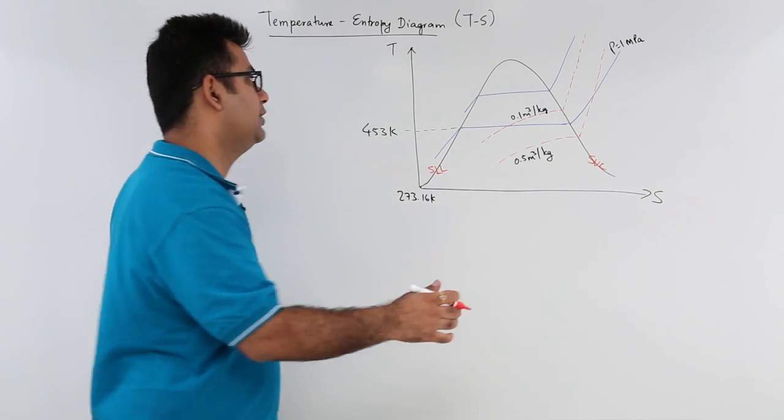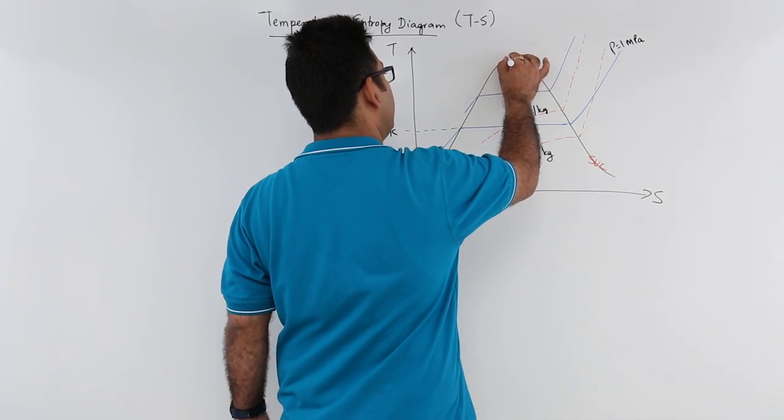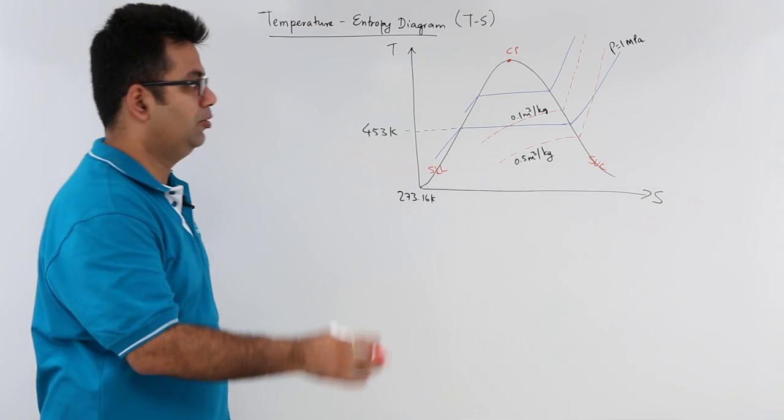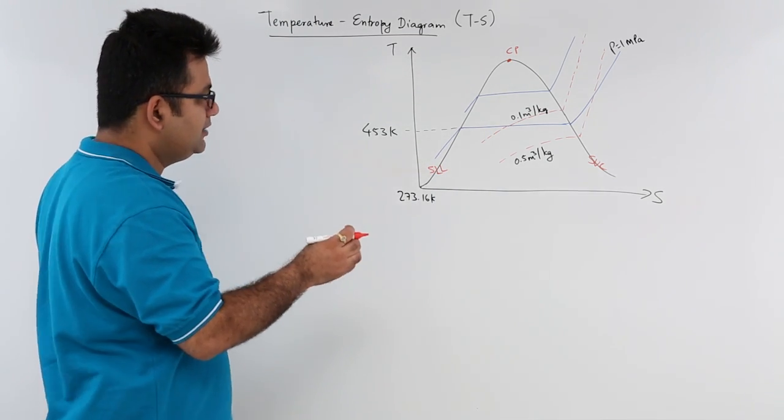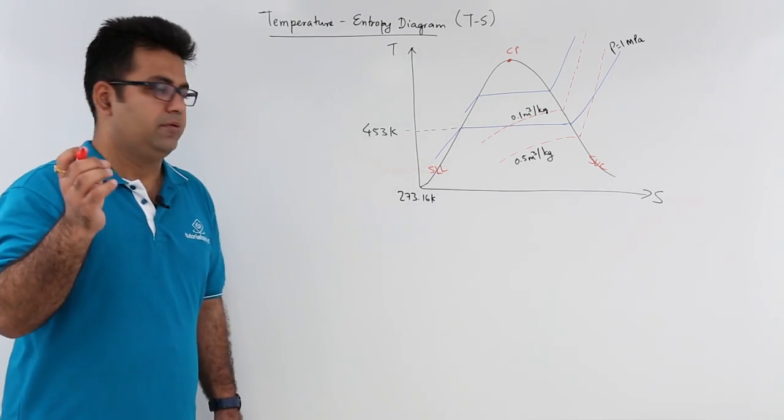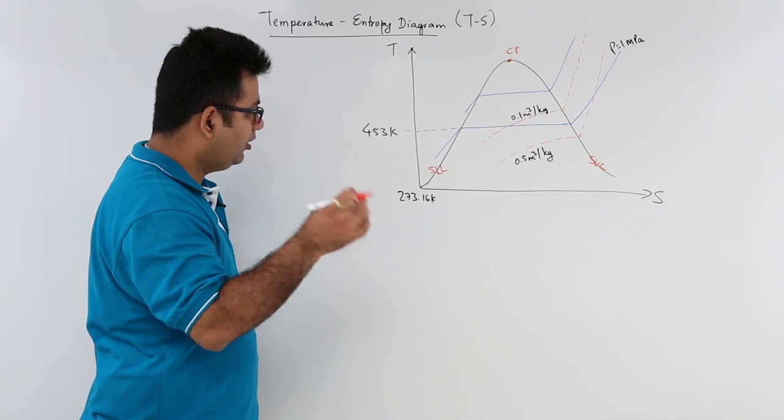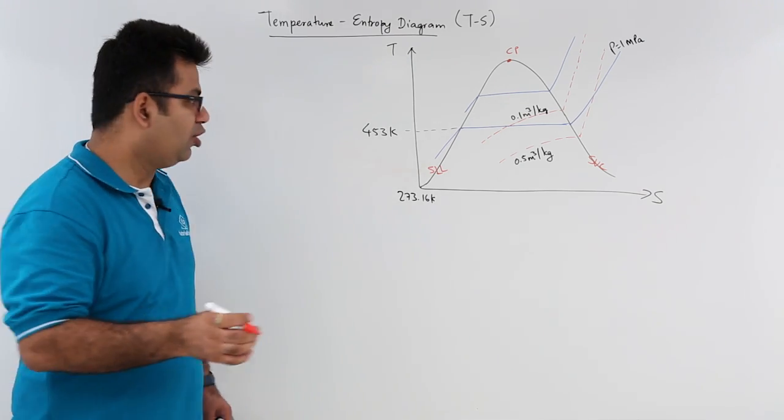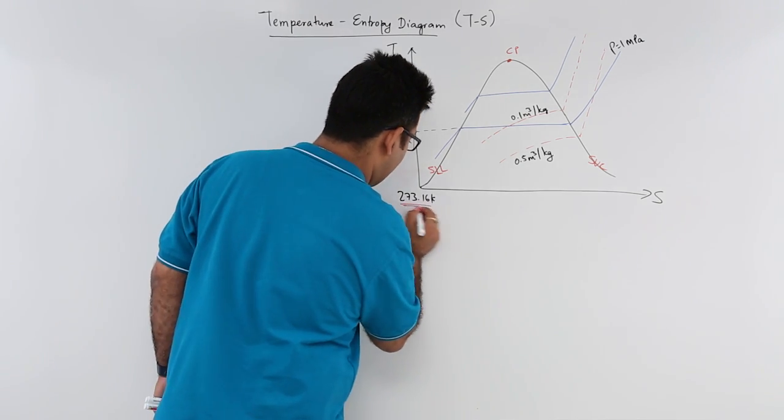These two lines intersect at this point which is called the critical point. The saturated liquid line almost starts at this temperature.